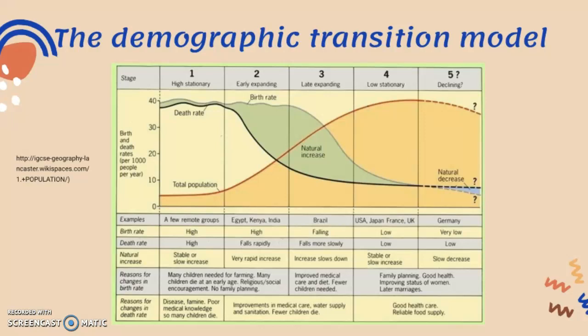In stage four, both the birth rate and the death rate are low, but the birth rate is still higher than the death rate — that's very important. The population is still increasing, just very slowly, as shown by the orange line coming to a plateau. This is because of family planning, improved status of women, later marriage, and so on.